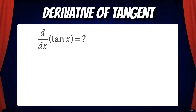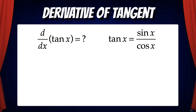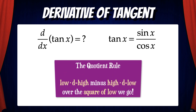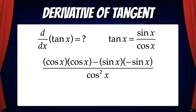Let's start with the derivative of the tangent function. The first thing we're going to do is rewrite tan x as sine x over cosine x. Then we're going to use the quotient rule. Recall that the easy way to remember the quotient rule is low d high minus high d low over the square of low we go. So in this scenario, we'll start by taking the low function, cosine x, and multiply it by the derivative of the high function, which also gives us cosine x. Then we'll subtract the high function, sine x, and multiply that by the derivative of the low function, which is negative sine x. Then we'll divide all of this by the low function squared, which gives us cosine squared x.